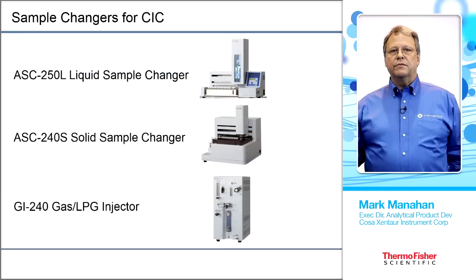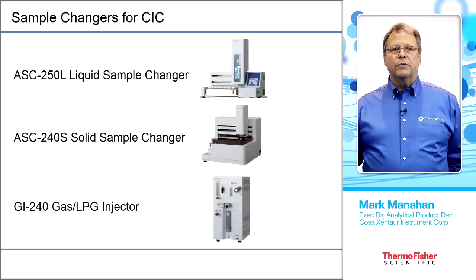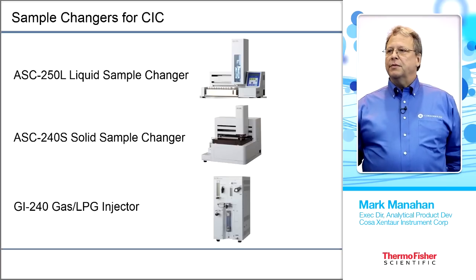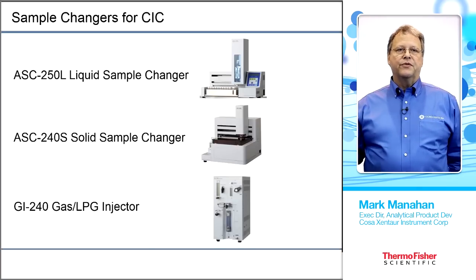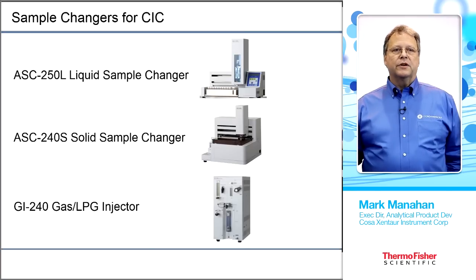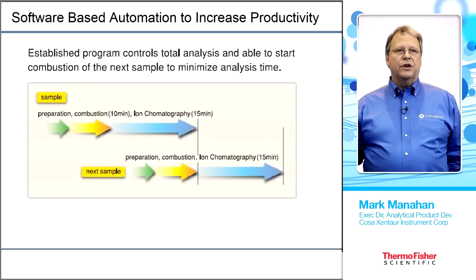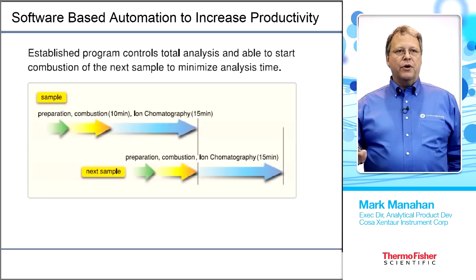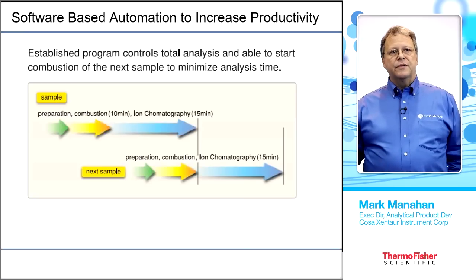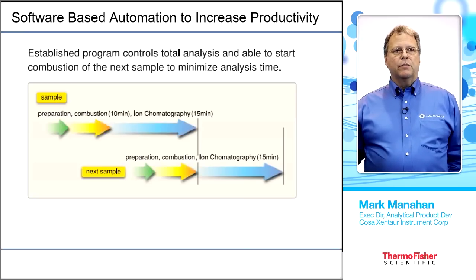Here are three typical sample introduction systems: the liquid autosampler model ASC-250L on top, the AS-2240 solid autosampler with 40 sample boats, and the gas injector for LPG and gases, model GI-240. A sequence diagram shows that the next burn occurs before the current ion chromatogram is finished. So the first analysis is the combustion time plus the IC run time, and every subsequent analysis is just the IC chromatography time.